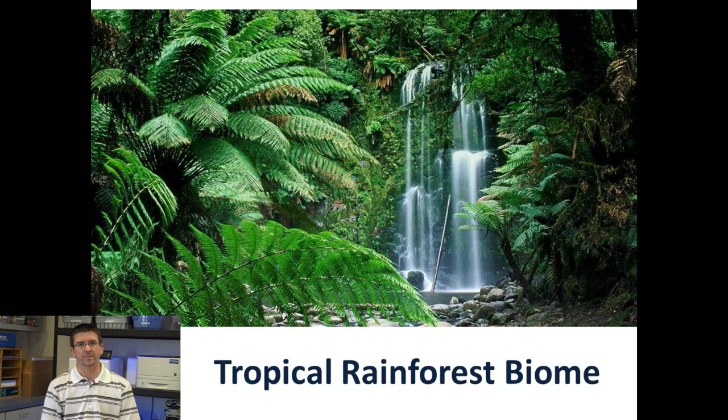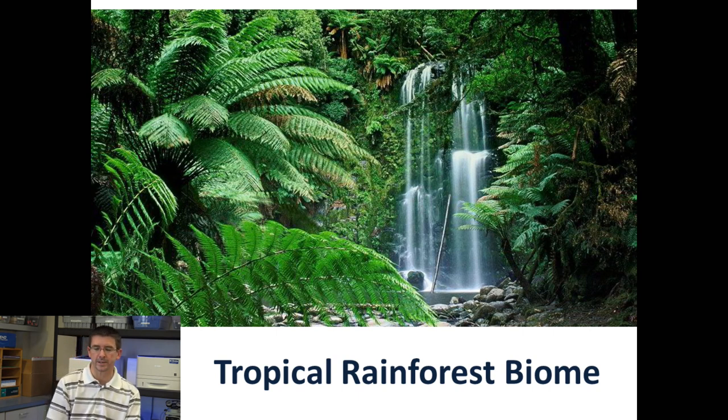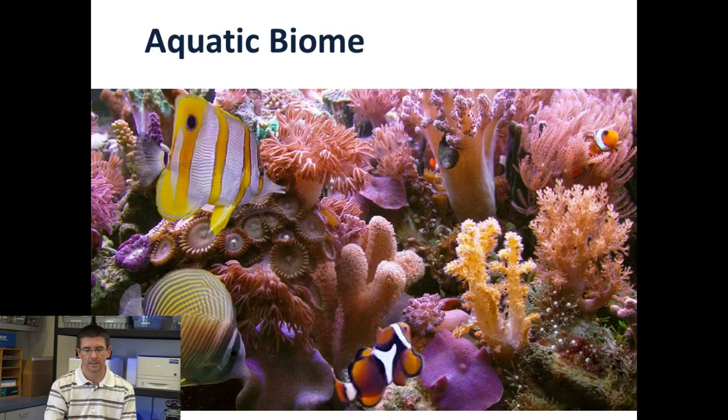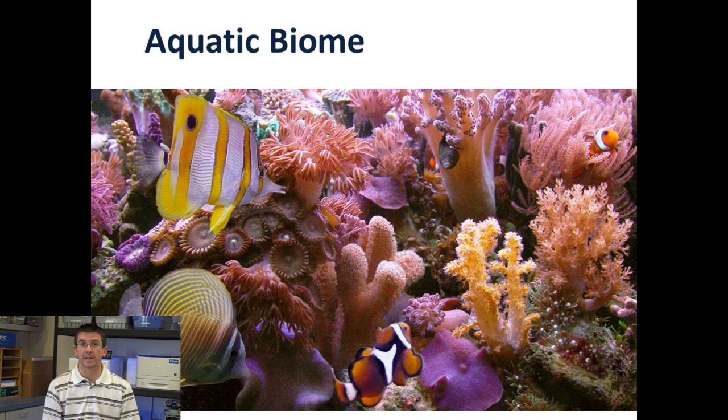The tropical rainforests — these are your jungles found near the equator. They receive a great deal of rainfall and have very diverse plants and animals. And last is the aquatic biome, which makes up the lakes, rivers, and oceans of our planet. Over the course of this unit, we'll be looking in a lot more detail at each of these different biomes, as well as different ecosystems that can be found within them, the different types of plants, animals, as well as abiotic factors that they contain.